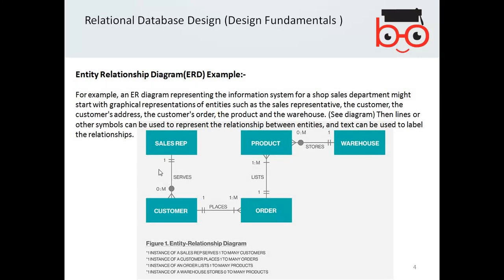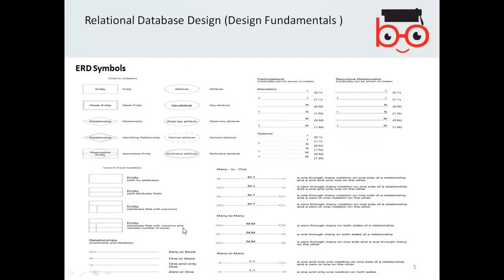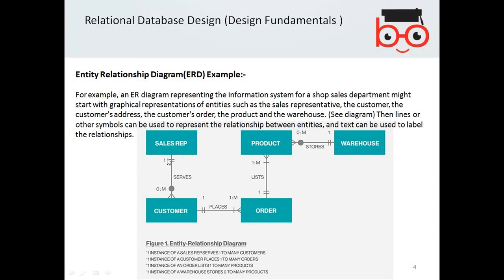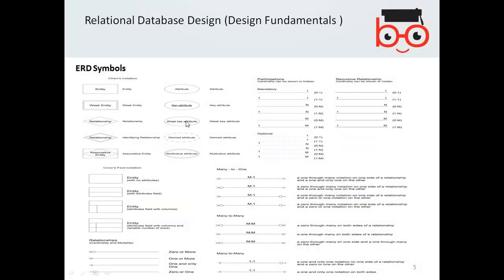In entity relationship diagrams you need to know which entity is related to which other entity, and how they are related. For example, sales representative, product, warehouse, customer, and order are all basically related to each other. These relationships — one-to-one, one-to-many, and many-to-many — should be defined using entity relationship diagrams.